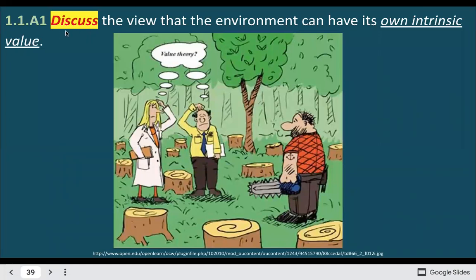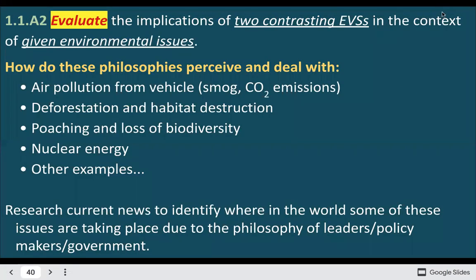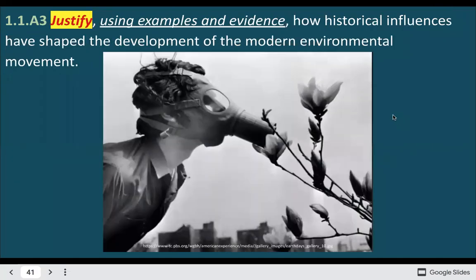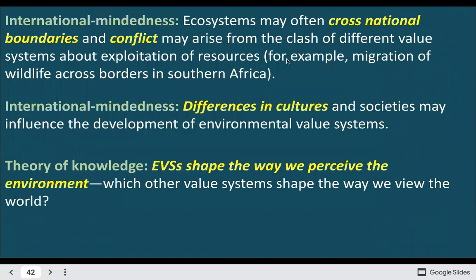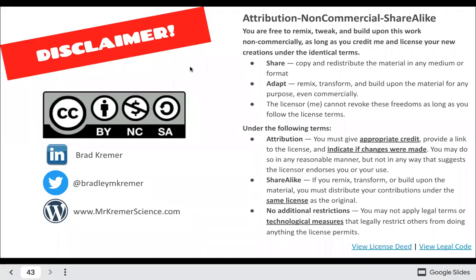Here are examples of IB-style questions: 'Discuss the view that the environment can have its own intrinsic value.' And 'Evaluate the implications of two contrasting EVSs in the context of an environmental issue.' I've actually seen an exam essay question with pretty much this exact wording, except the environmental issue was air pollution, which we haven't covered yet. You can find the link to this slideshow in the information section below if you'd like more information.